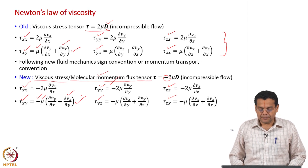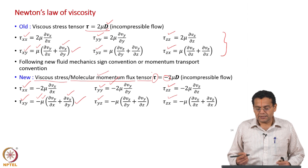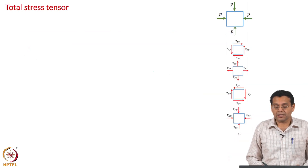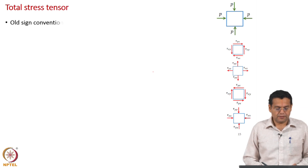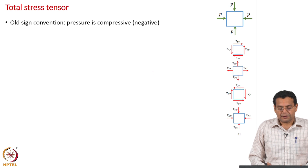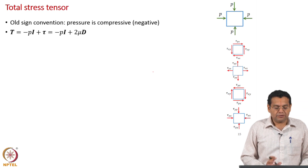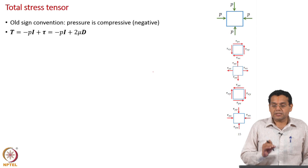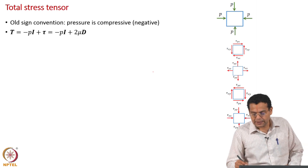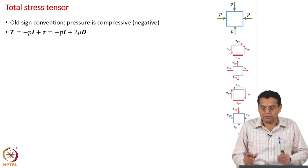The conclusion from this slide is that whatever we discussed for the simple form has been extended to the more general 3D form by including a negative sign. One other important point is that tau is now interpreted as the molecular momentum flux tensor. Now, how do we write the total stress tensor? We are going to compare the old fluid mechanics sign convention and the new fluid mechanics sign convention. The only difference can come from the pressure term.